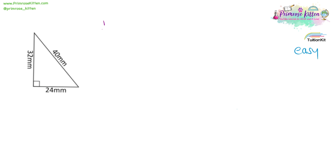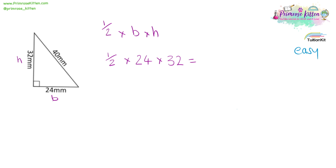Our equation for calculating the area of a triangle is half times base times height. The base of this triangle is down here and the height of this triangle is here. So we're going to do half times 24 times 32, giving us an area of 384 millimetres squared.